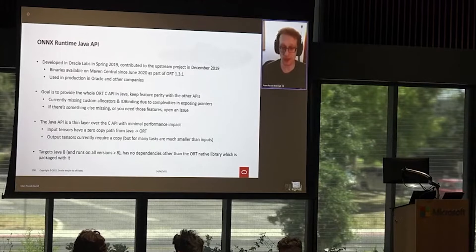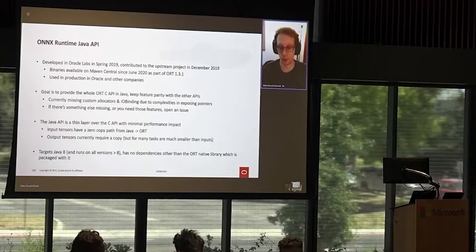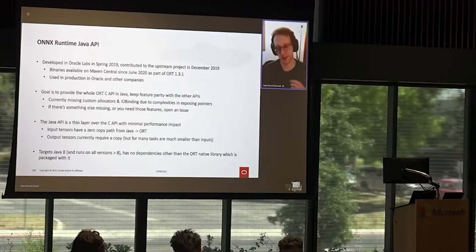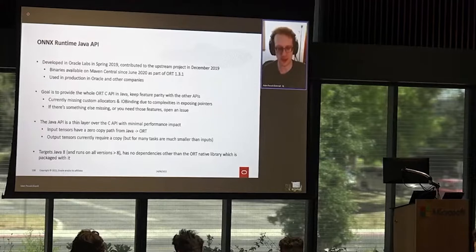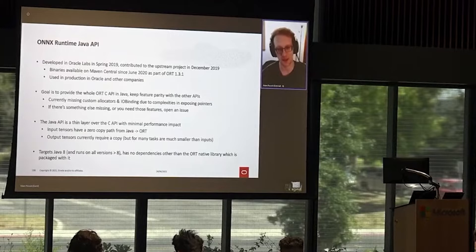Our aim is that the Java API is a very thin layer over the C API with minimal performance impact. We have a zero-copy path from Java into ONNX Runtime for inputs. You do have to do a copy on the way out, although we're looking at ways of avoiding that. Fortunately, your outputs tend to be a little smaller than your inputs, so it's less of a problem, and you have to do a copy if you're on a GPU anyway.